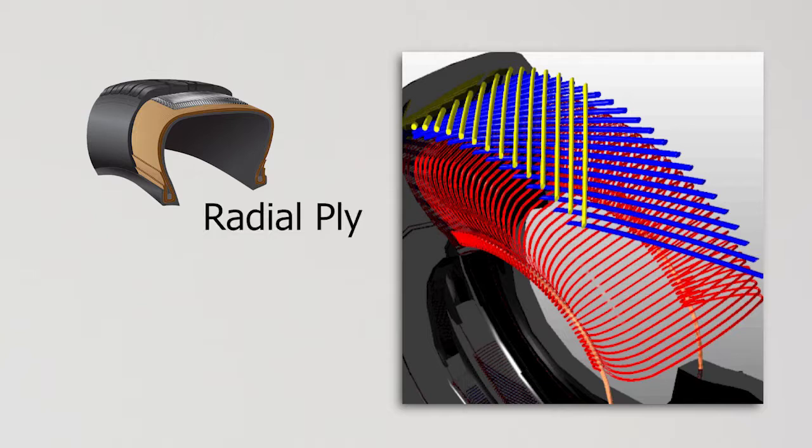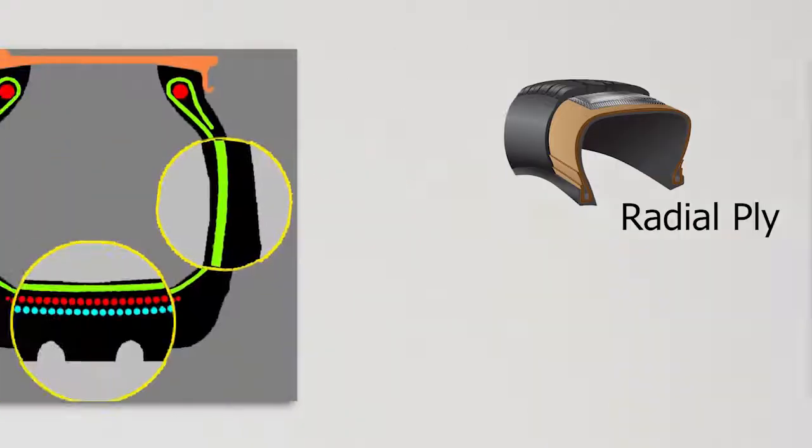Now radial tires have body plies running straight across the tire at a 90 degree angle from the beads. Passenger vehicles typically use fabric cords such as polyester, while larger tires found on trucks and other commercial vehicles use steel cords. Typically there is one layer of ply wrapping around the beads.